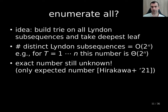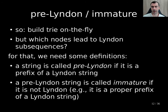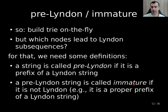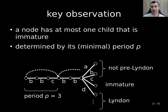So the idea is to build this trie on the fly, and for that we need to know which nodes can lead us to Lyndon subsequences. For that we need two definitions. The first one is pre-Lyndon: a string is called pre-Lyndon if it is a prefix of a Lyndon string. The second one is that a pre-Lyndon string is called immature if it is not Lyndon — for instance, it is a proper prefix of a Lyndon string. The key observation is that a node has at most one child that is immature, and we can determine this child by using the minimal period.